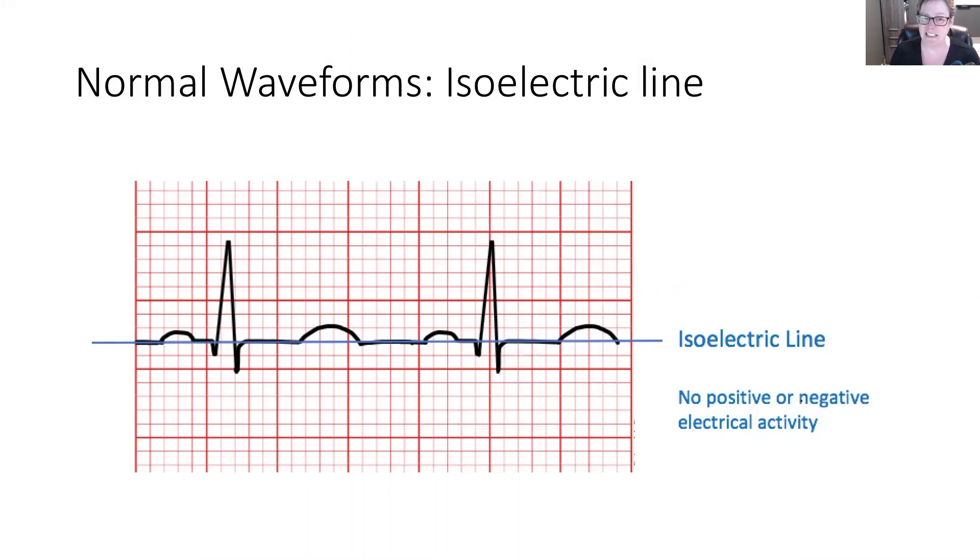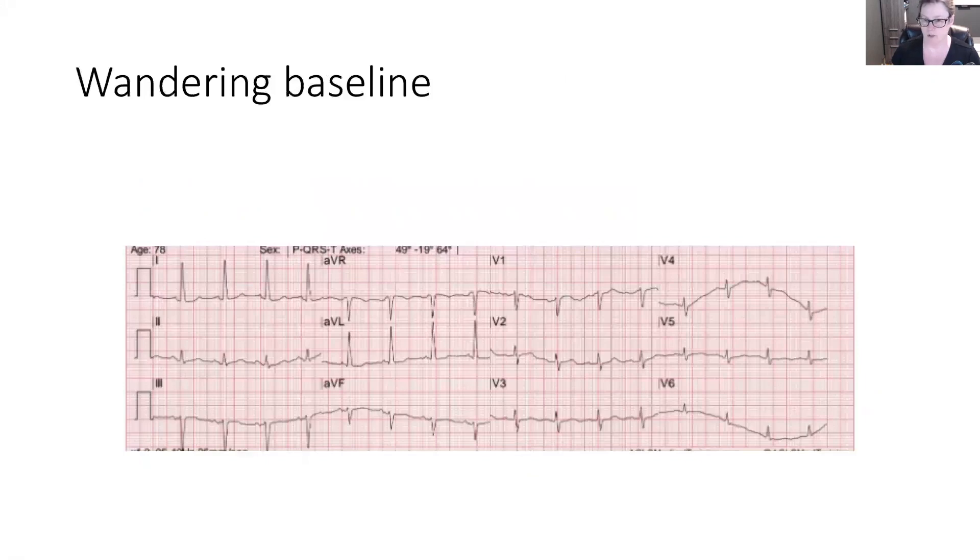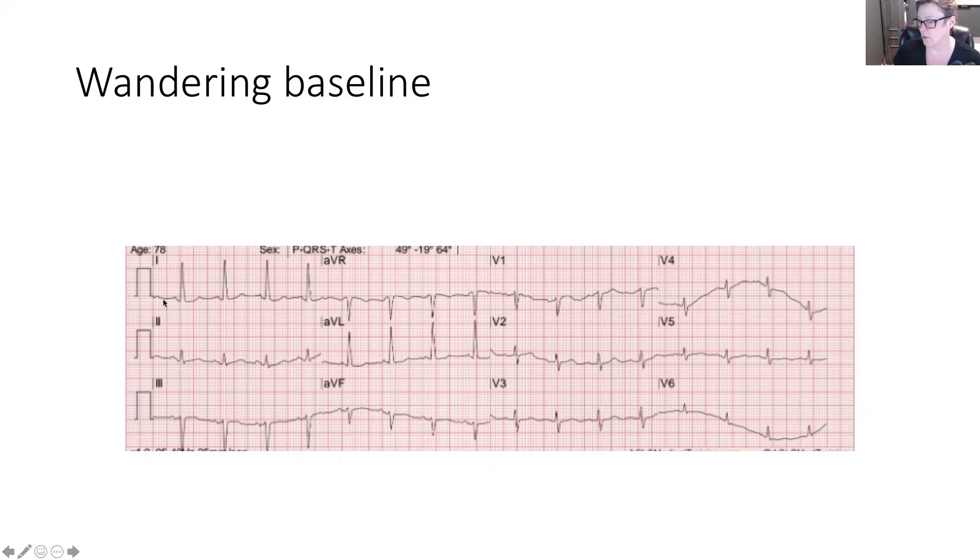Not all ECGs have an easily identifiable isoelectric line. It would be great if they did. So we're going to look at two examples. The first one here is a wandering baseline. You'll notice here, this is not lead two. There's lead one, lead two, lead three. But even in lead two, I can't just draw a straight line all the way across because it kind of dips down. And so this would be a difficult one to find the isoelectric line, but not a difficult one to analyze because we can still see very distinctive waveforms that we can measure.